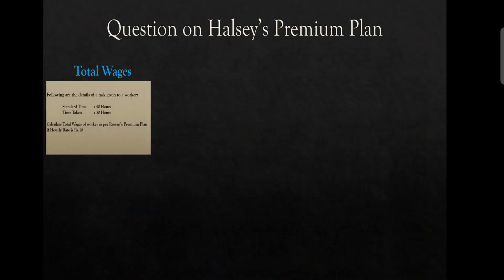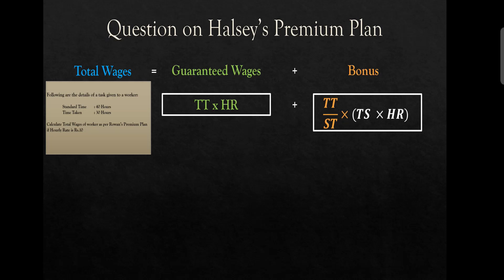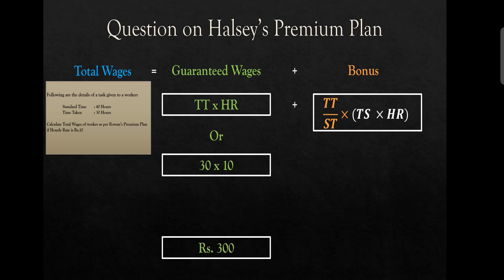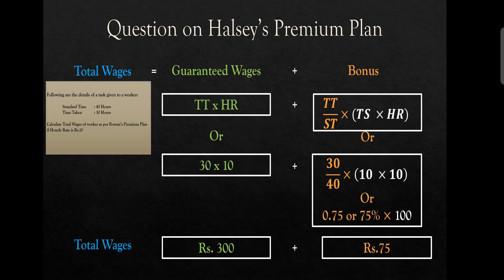Let's look at the full calculation. Total wages equals guaranteed wages plus bonus. Guaranteed wages: time taken (30 hours) multiplied by hourly rate (10 rupees) = 300 rupees. For bonus: the formula is proportion (TT/ST) multiplied by time saved into hourly rate. Time saved is 10 hours, rate is 10 rupees = 100 rupees maximum. Multiplied by 75% proportion gives 75 rupees bonus. So total wages here are 375 rupees.